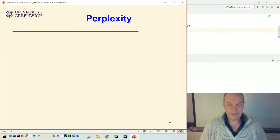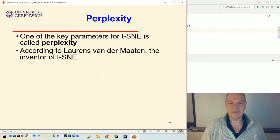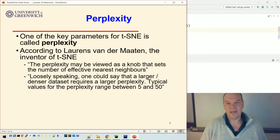So one of the key parameters you can use in t-SNE is called perplexity. And according to the person who wrote t-SNE, the inventor, Laurens van der Maaten, the perplexity is like a knob that can set the number of effective nearest neighbors. So we're trying to get some sense of the clustering. So we want some of our data points to have lots of close neighbors, because that would tell us there's a cluster there. And he also said that loosely speaking, one could say a larger denser dataset requires a larger perplexity. Typical values for the perplexity range between 5 and 50.